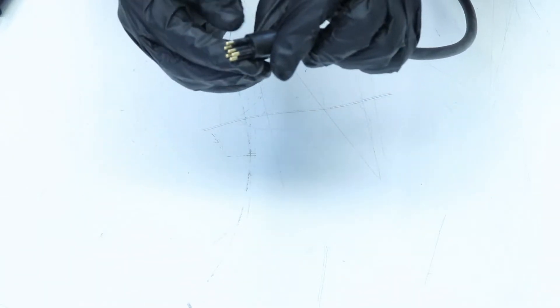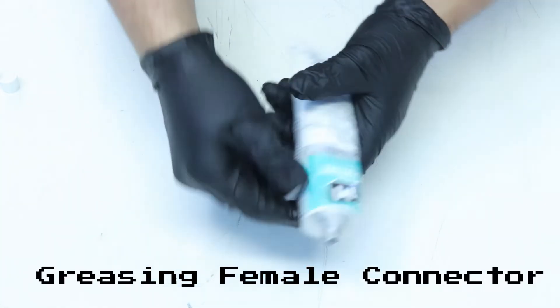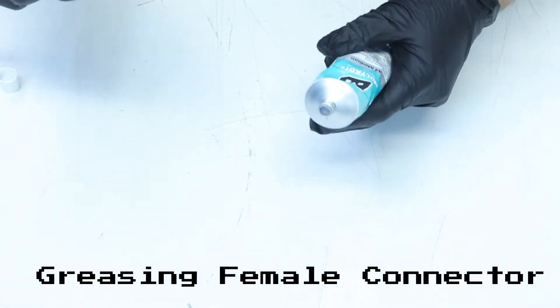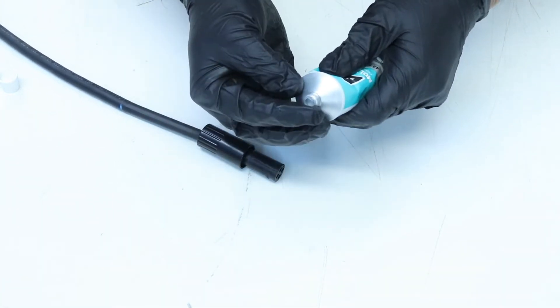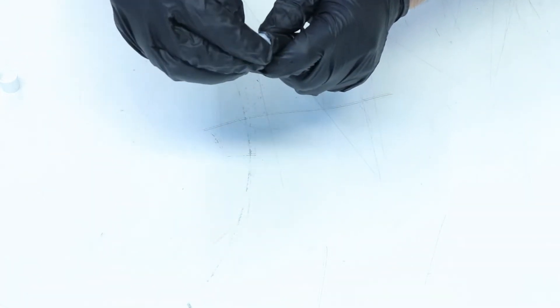Properly greased connectors should be easy to mate and disconnect. Dry connectors may be difficult to mate immediately after being greased. This is to be expected and will go away as the grease impregnates the rubber.